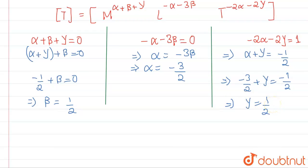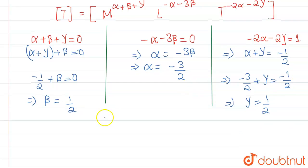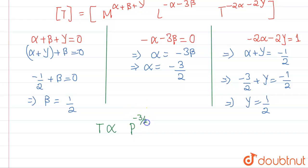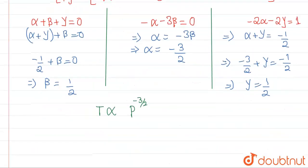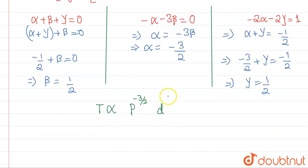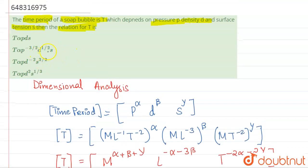So the final answer is: T is proportional to p to the power minus 3/2, times d to the power 1/2, times s to the power 1/2. Our answer is clearly option number B.